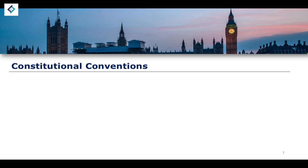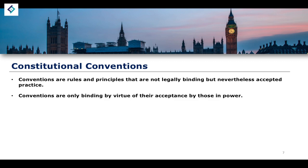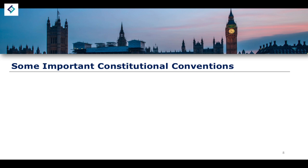The first non-legal source of the UK Constitution is the idea of a constitutional convention. Conventions are rules and principles that are not legally binding but are nevertheless accepted practice — general rules of thumb that major important people within government follow. Constitutional conventions are only binding by virtue of their acceptance by those in power, enshrined through tradition and historical political practice. Important constitutional conventions often deal with the relationship between the three branches of government: the executive, the legislature, and the judiciary.